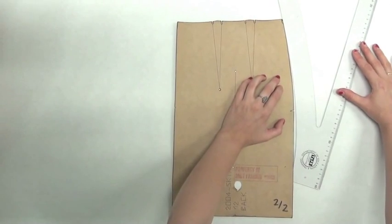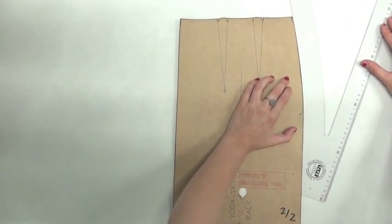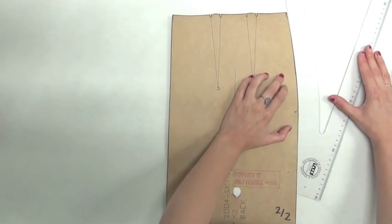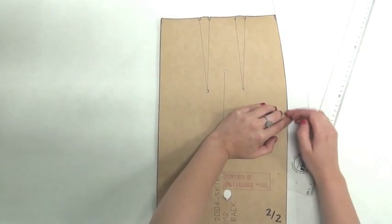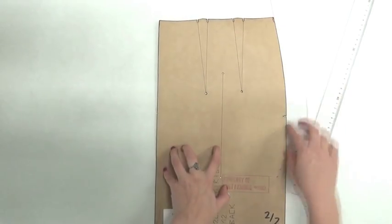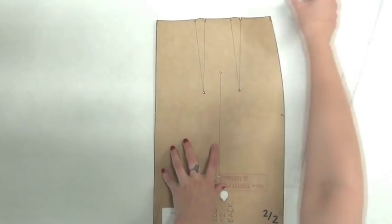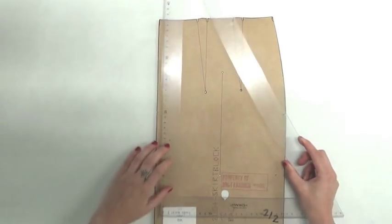You can see how you can move the pattern ruler along until it fits and creates a nice transition from that hip point to the waistline to follow along. That's how these different areas are used within the set square.